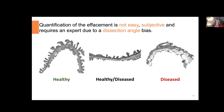Here is an example: on the left-hand side, you see the podocyte covering the GBM with mainly healthy foot processes attached. On the right-hand side, you see effacement, which is not really difficult to determine. However, what is the situation in between? You have some areas with partial effacement, as well as healthy areas. Quantification of effacement is therefore not easy and highly subjective, and it requires an expert due to the additional problem of dissection angle bias.